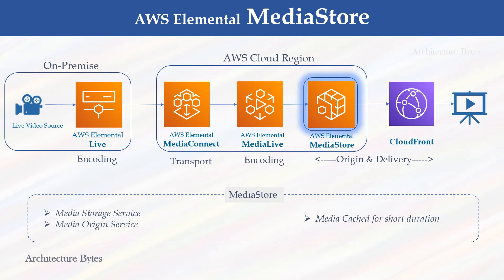MediaStore is a media origin and storage service. When you write content to AWS Elemental MediaStore, it is automatically held in a replicated cache for the first few minutes after creation and after each update, providing low latency and consistency for video stream delivery. A use case would be serving live adaptive bitrate video streams that require HTTP origin. If the live streams are already in the correct format and have any required DRM applied, you can use MediaStore as a pass-through video origination service. However, if multiple formats and DRMs are required or DVR-like features are needed, you would use AWS Elemental MediaPackage.